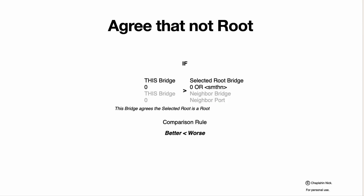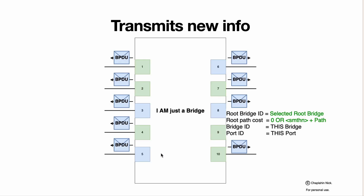If the received information is better — based on the rule that less is better — meaning the selected root bridge ID received is better than our own bridge ID, then our device agrees that the received bridge is the root. It starts transmitting that information with the selected root bridge ID, updated root path cost calculated by adding the original path cost plus the cost based on its own port line rate. The bridge ID and port ID remain the same because this device itself hasn't changed.